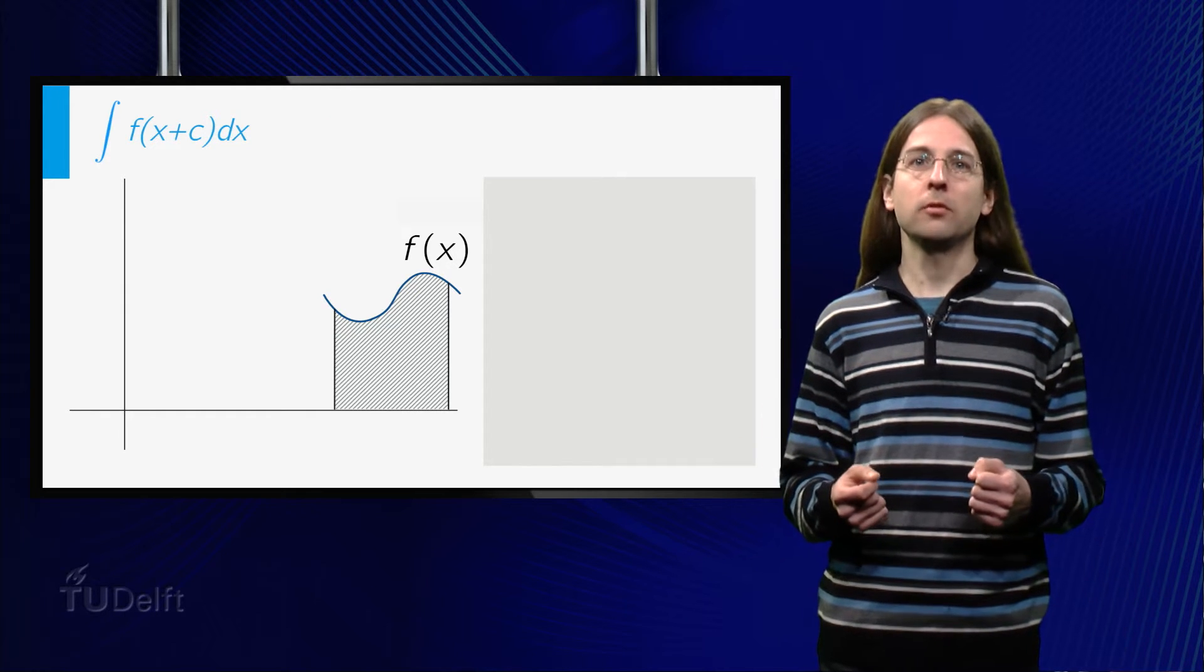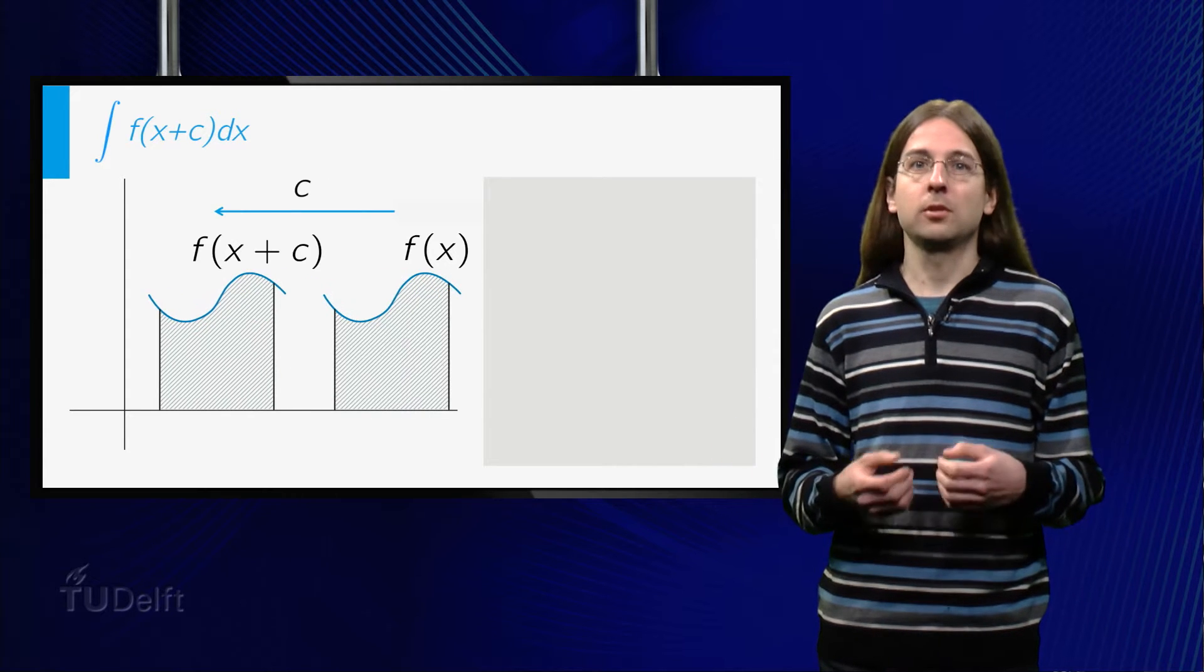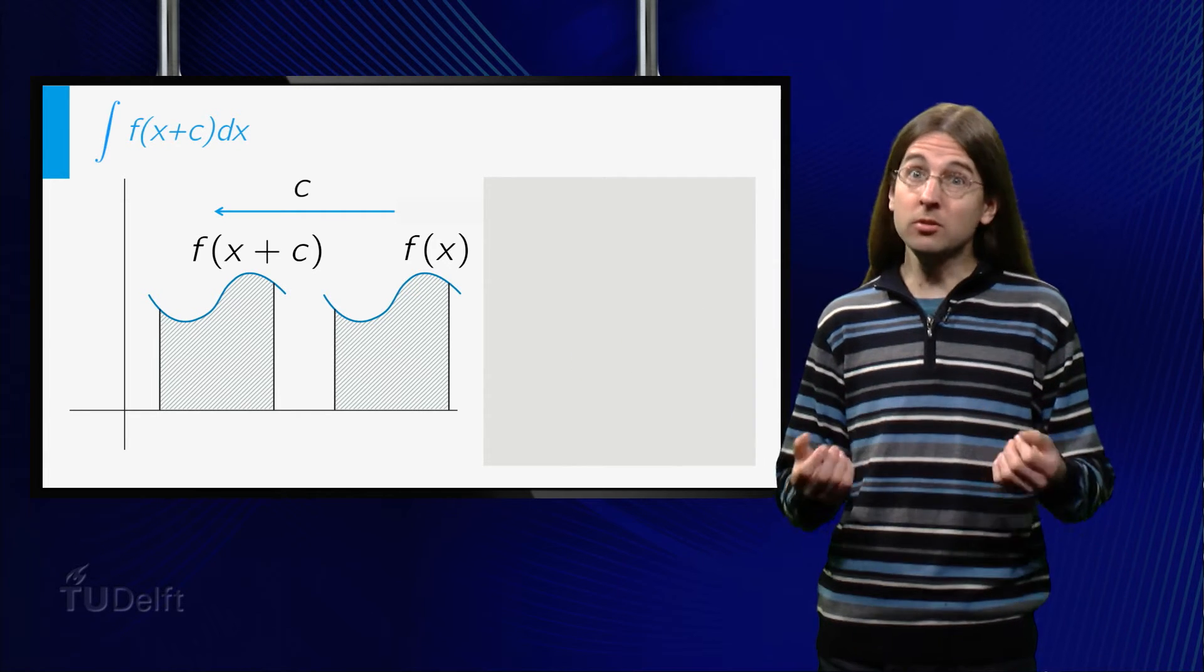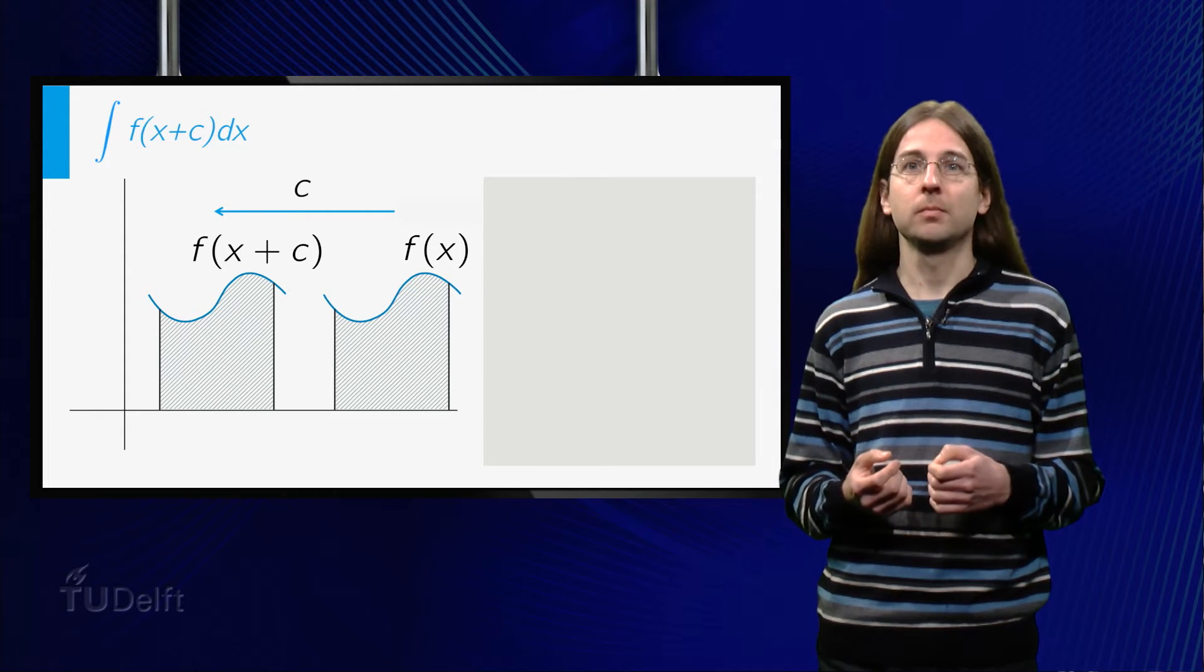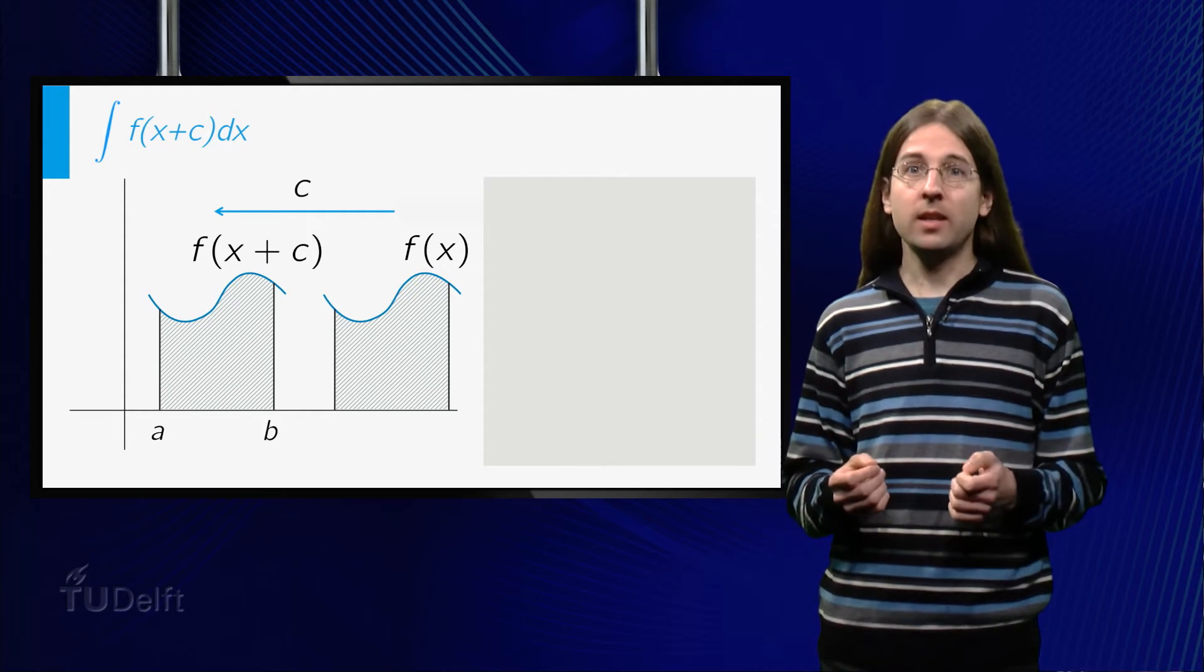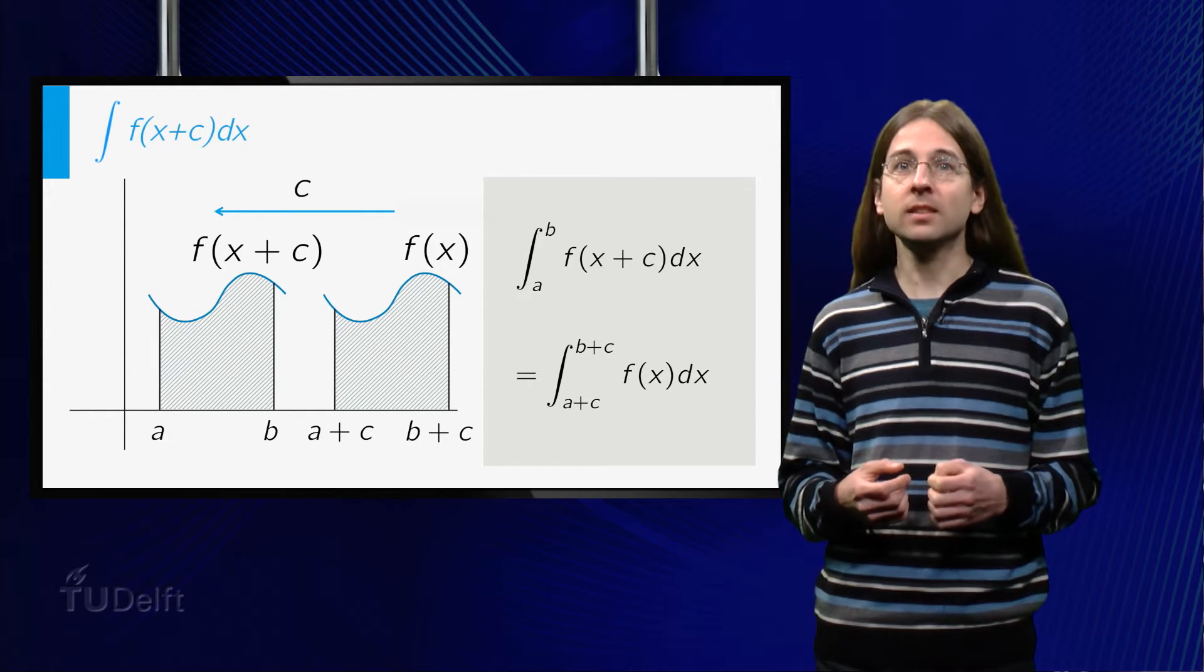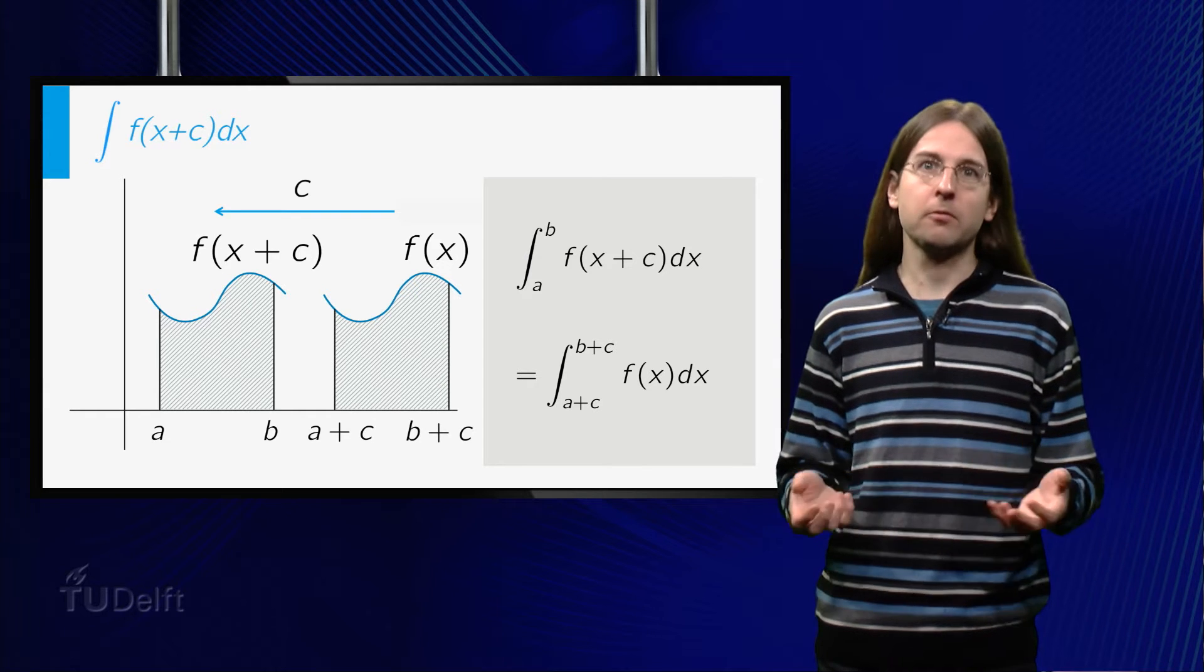We first consider the integral of f of x plus c. The graph of f of x plus c equals the graph of f of x, but shifted c to the left. The integral of f of x plus c therefore equals the integral of f of x. But we have to be careful about the endpoints. Indeed they have to shift by c. So we obtain that the integral from a to b of f of x plus c dx equals the integral from a plus c to b plus c of f of x dx.